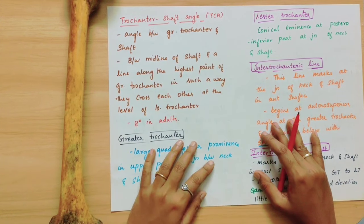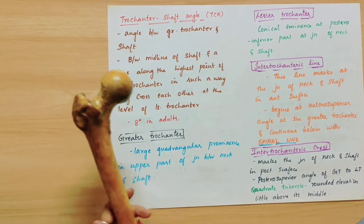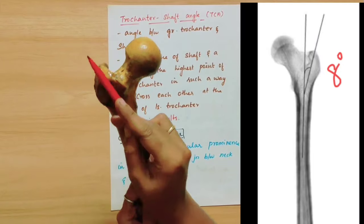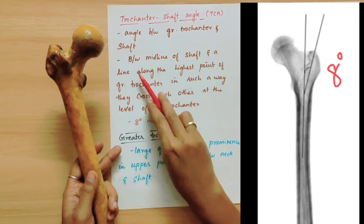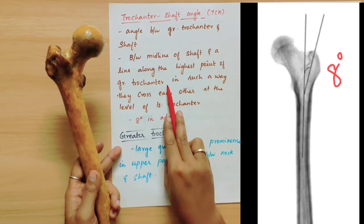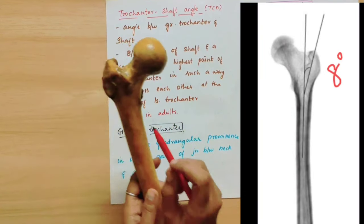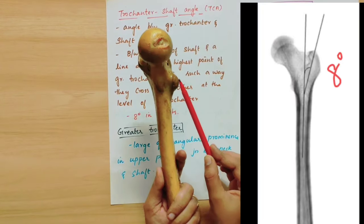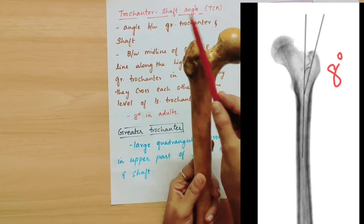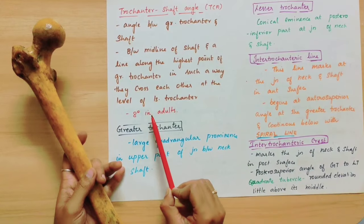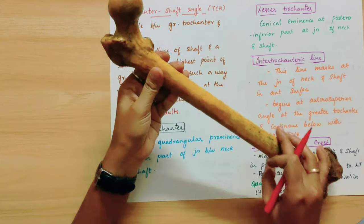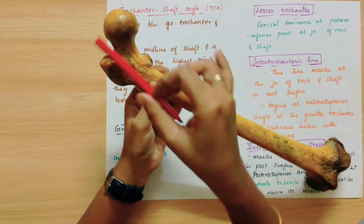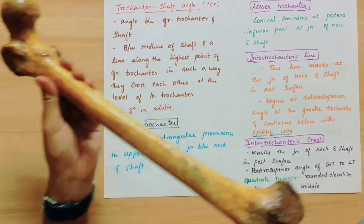Next is another angle called the trochanteric shaft angle. This is the angle between the greater trochanter and the shaft. We drop a line along the highest point of the greater trochanter and a midline of the shaft; these two lines intersect at the level of the lesser trochanter, forming an angle of 8 degrees. The trochanteric shaft angle is clinically important: in cases of fracture, when a rod is inserted into the medullary cavity, the trochanteric shaft angle must be accounted for.